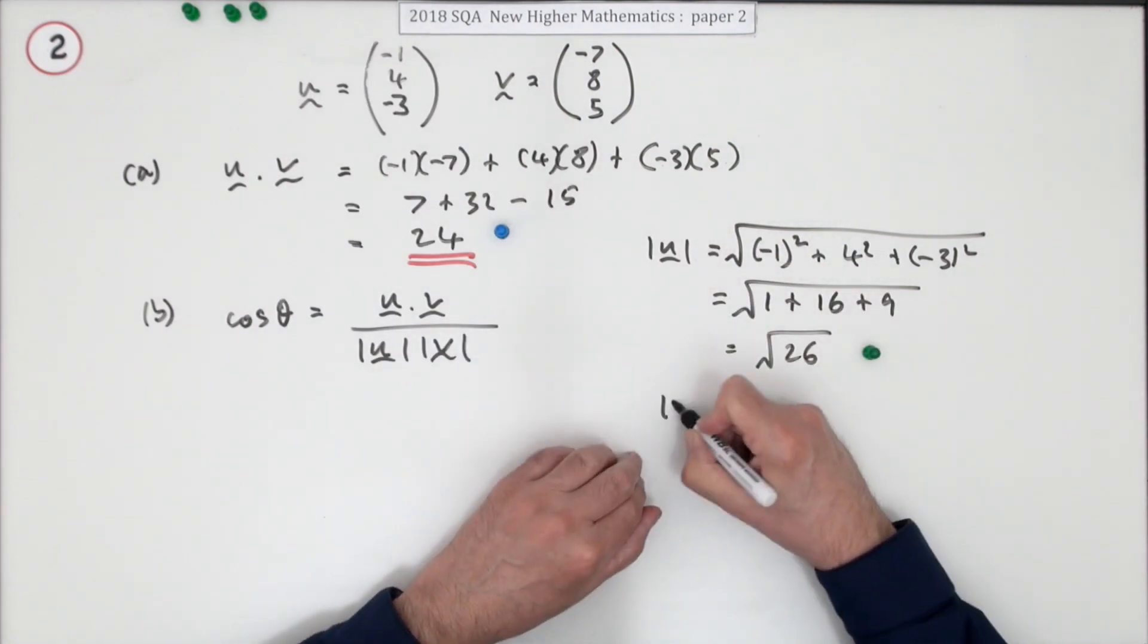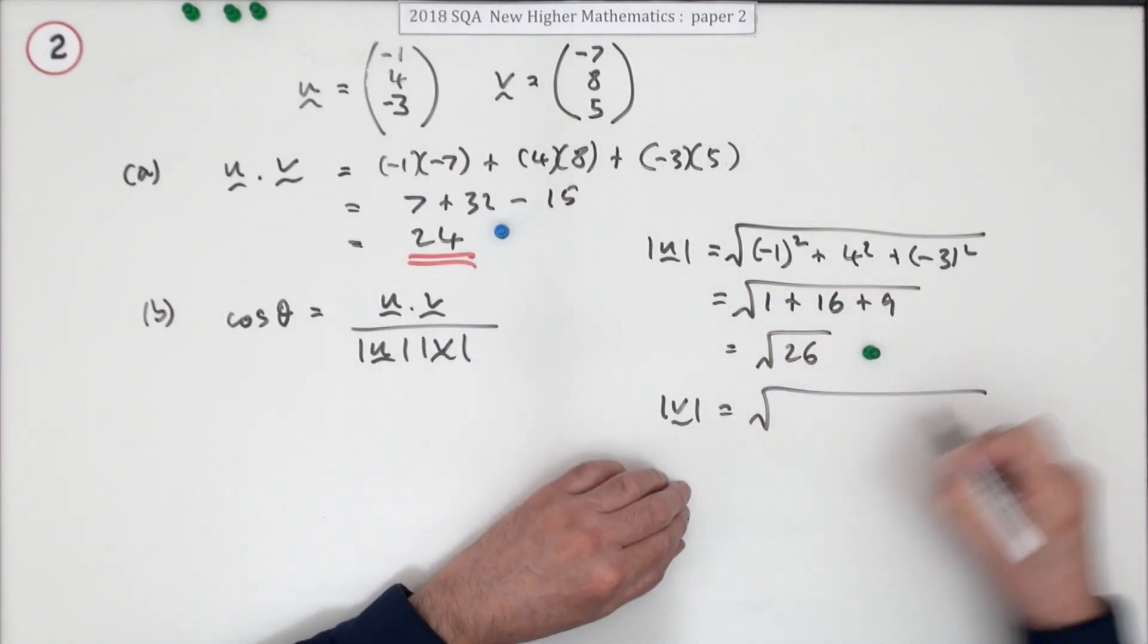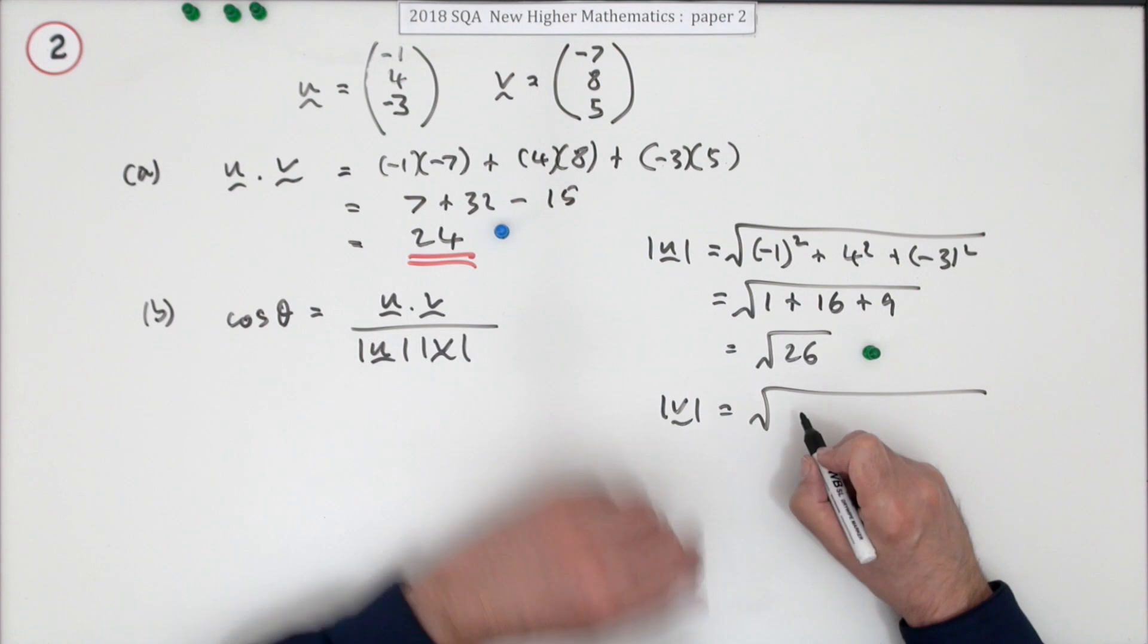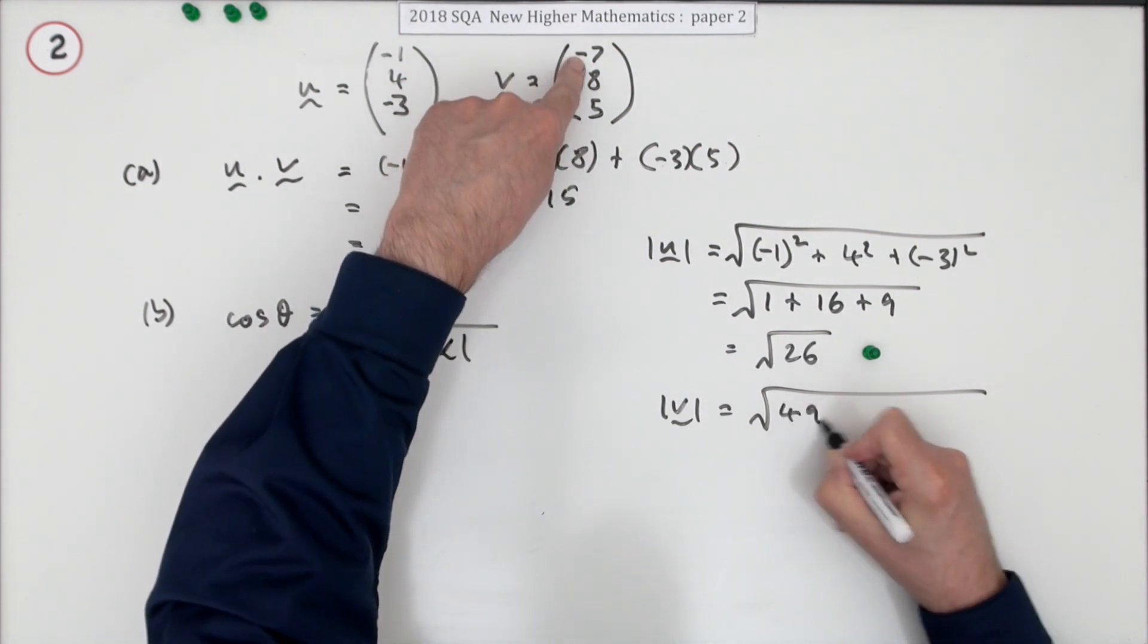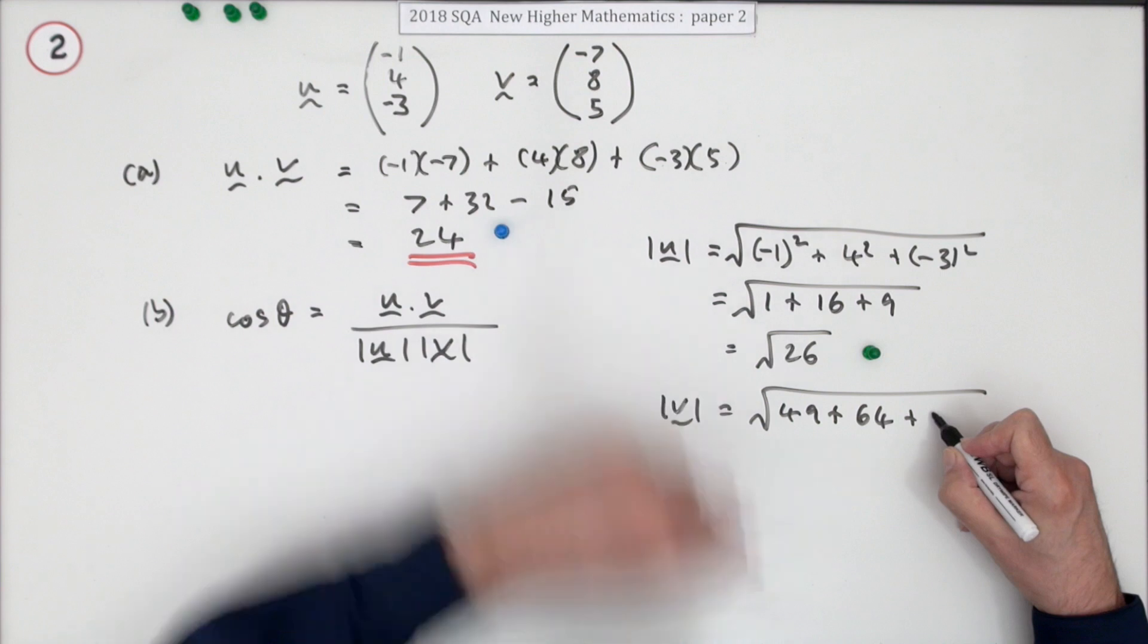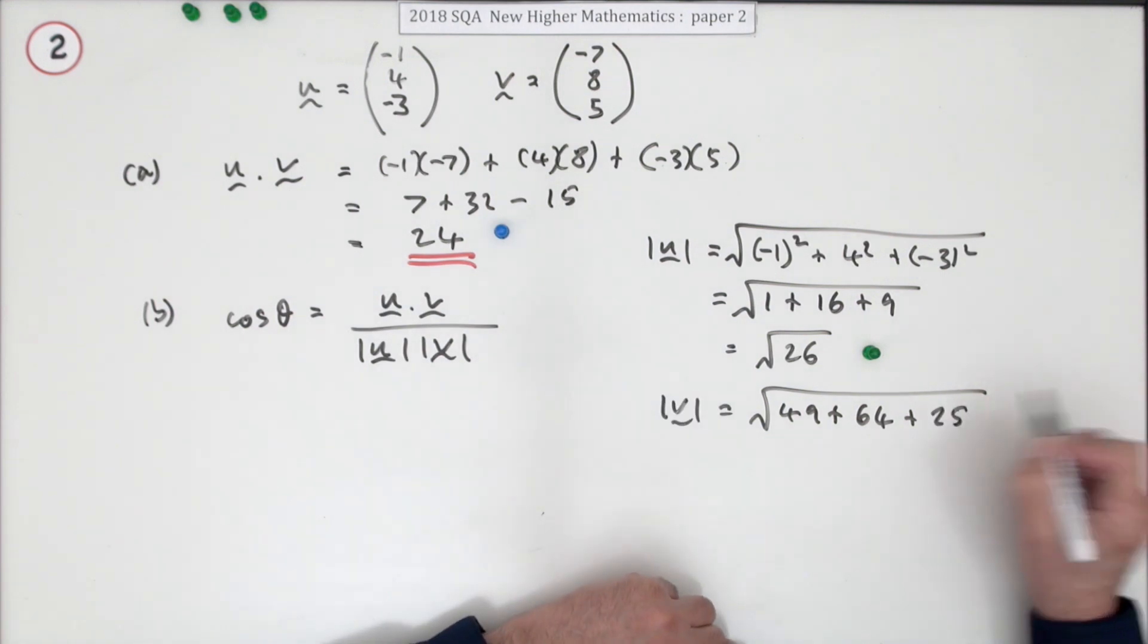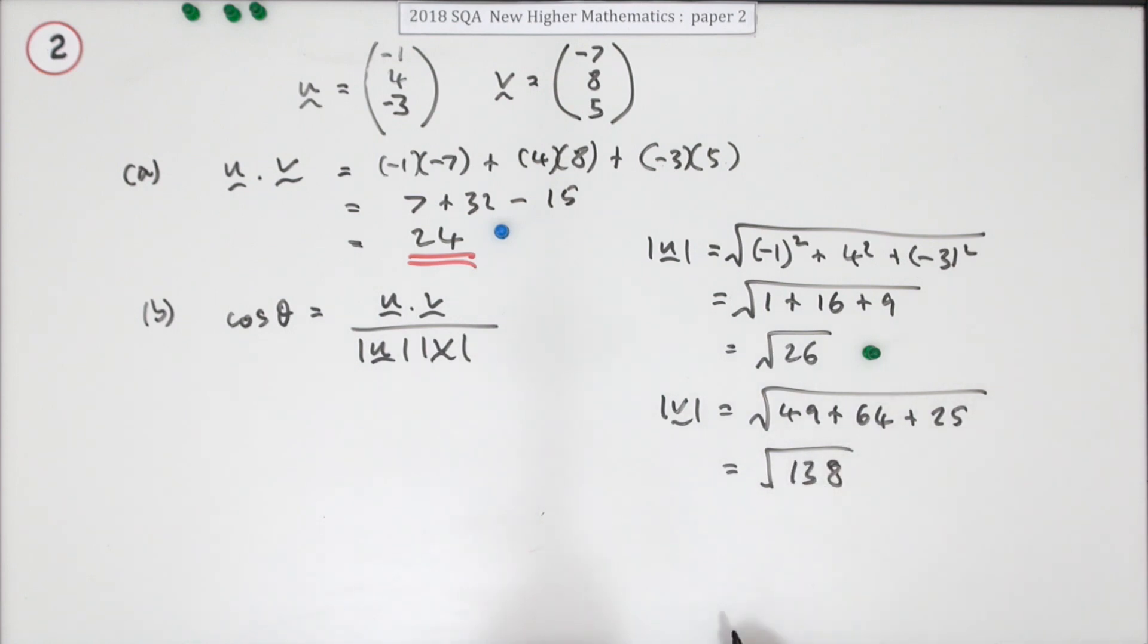Similarly for the magnitude of v - that's going to be 49 plus 64 plus 25, so that will be 9 and 9's 18 and 1... 138. That gets a mark, but you just use your calculator.